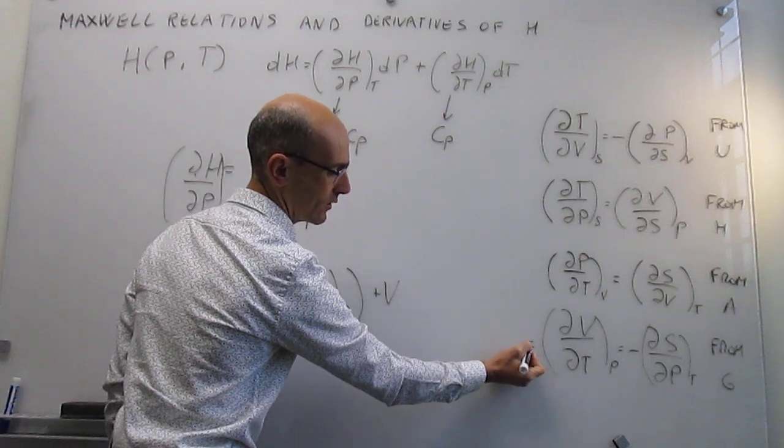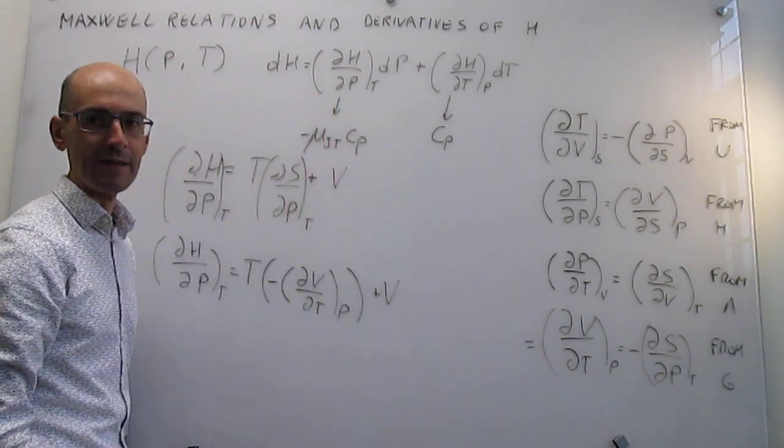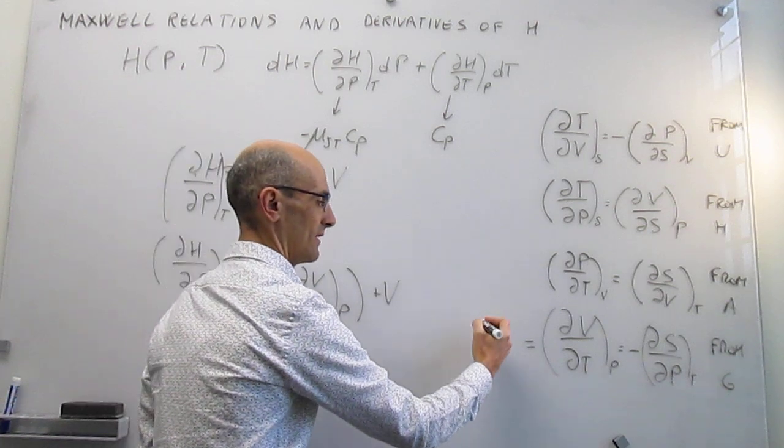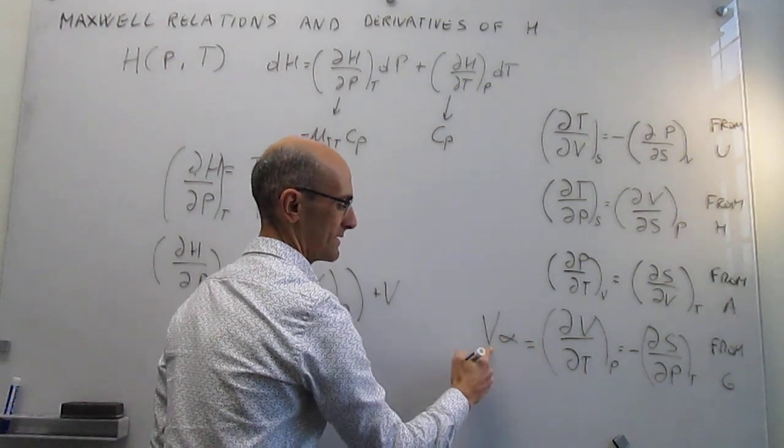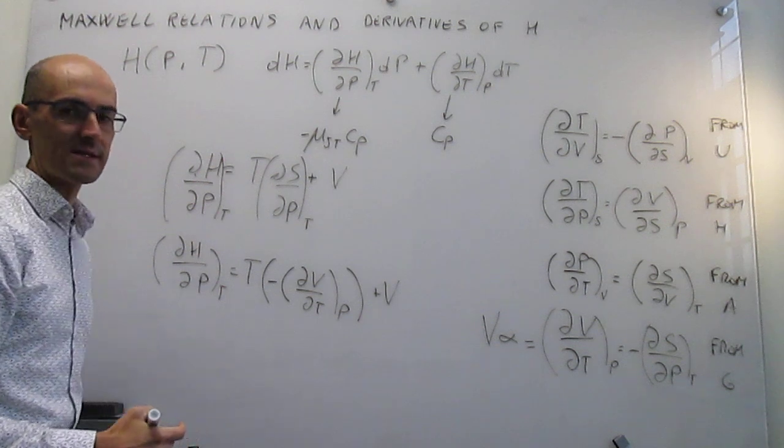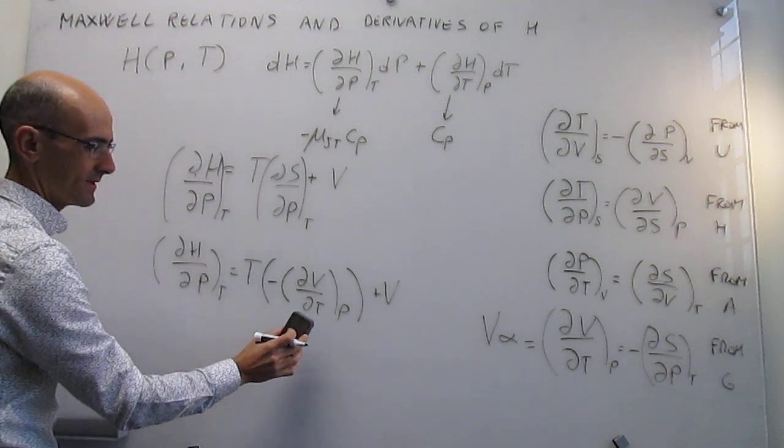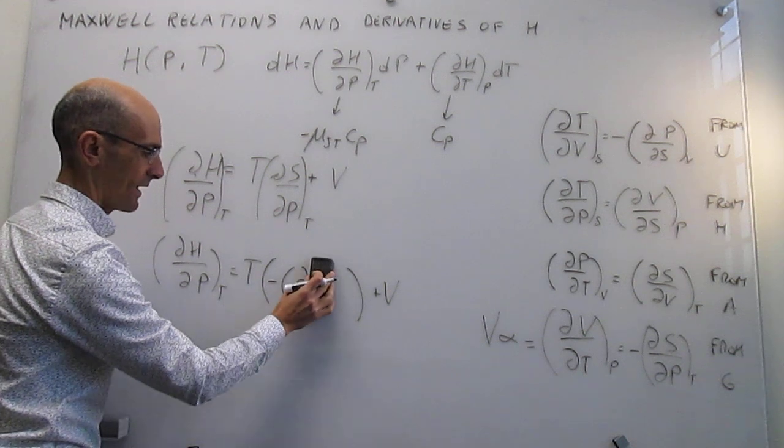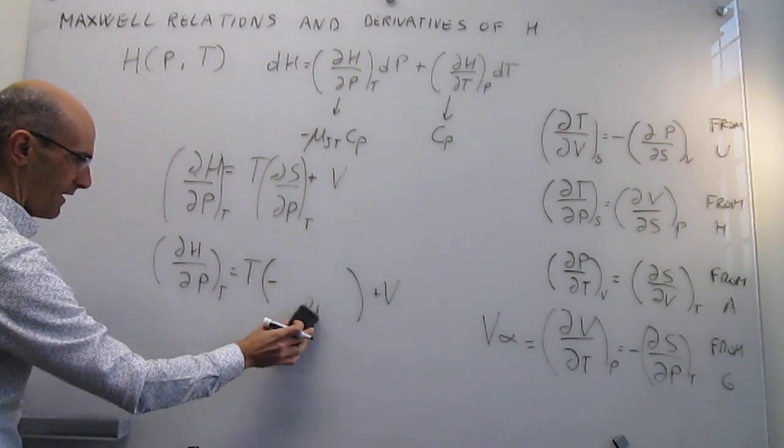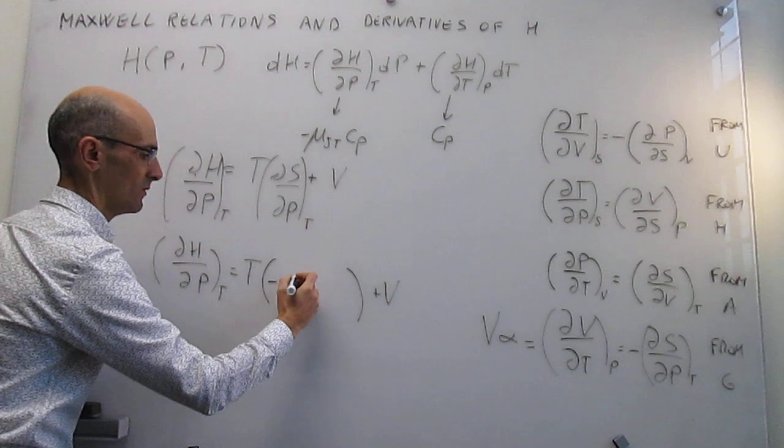As a matter of fact, what we did in the video where we derived this Maxwell relation for the Gibbs energy is to recognize that this is simply V alpha, where that's the volume, and that is simply the expansion coefficient. So we can go right ahead and say that from this Maxwell relation we actually know that all that happens to be equal to V alpha.